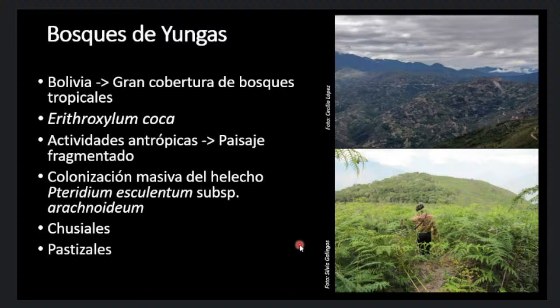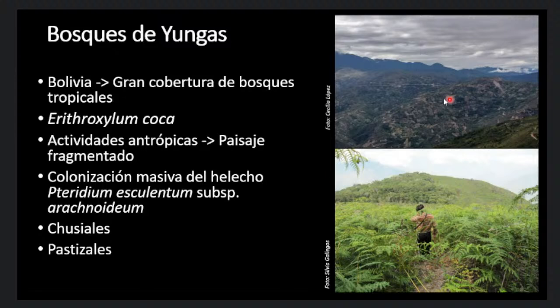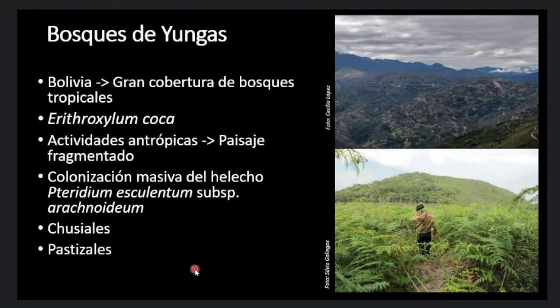Bolivia posee gran cobertura de bosques tropicales; sin embargo, estos son el lugar donde se siembra la coca y nuestros bosques han sido reducidos a paisajes muy fragmentados. La técnica más común para ampliar la frontera agrícola es a partir de chaqueos que se descontrolan y terminan en incendios. A raíz de esto ocurre la colonización masiva de helechos del género Pteridium; en nuestro caso, Pteridium sculentum subespecie aracnoideum, que localmente se conocen como chusiales. Después de un incendio, a los dos o tres meses, ya se puede ver esto, y cuando estos chusiales son quemados consecutivamente, empiezan a dominar más las gramíneas y se convierten en pastizales.